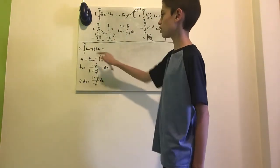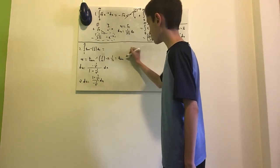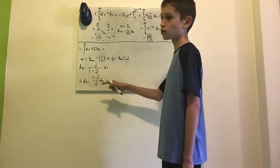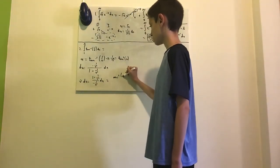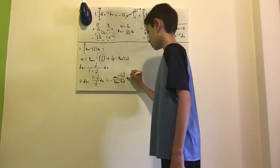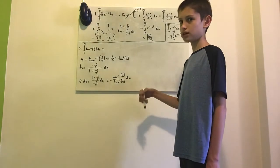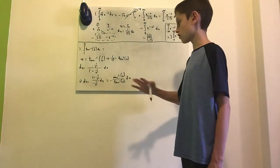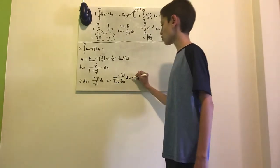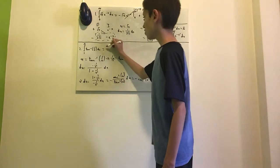Solving for dx: we have dx equals (1 plus 1 over x squared) over (negative 1 over x squared) times du. Taking the arctangent of both sides, we get 1 over x equals tan(u), so 1 over x squared equals tan squared of u. Then 1 plus tan squared equals secant squared of u, divided by minus tan squared of u. Simplifying — secant squared is 1 over cos squared, and 1 over tan squared is cos squared over sin squared, so the cosines cancel — we get negative cosecant squared of u du.